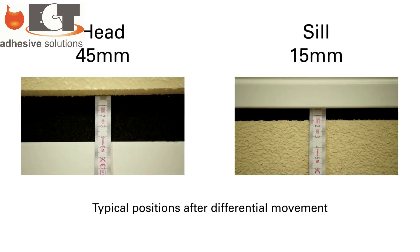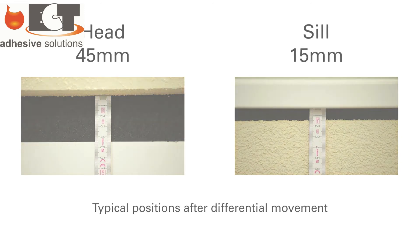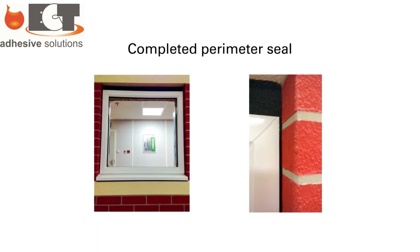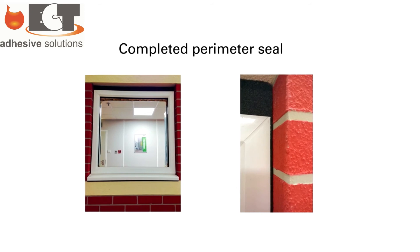After all the settlement has taken place, the gaps can be typically 45 millimeters at the head and 15 millimeters at the sill. The completed perimeter seal is capable of accommodating the high levels of differential movement whilst maintaining excellent weather resistance.